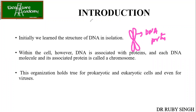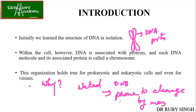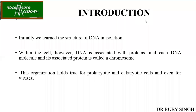This organization holds true for prokaryotic as well as eukaryotic cells, and even for viruses. You don't have naked DNA present in any species. Naked DNA is highly susceptible or prone to cleavage by many nucleases. That's why DNA is always wrapped around with proteins — it is for the protection of the DNA; otherwise it will get easily cleaved by nucleases.